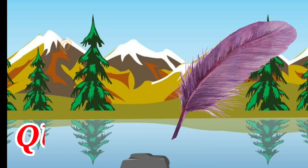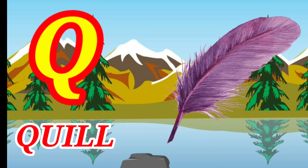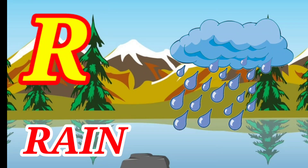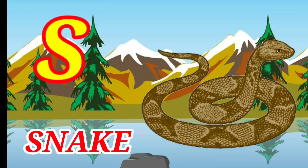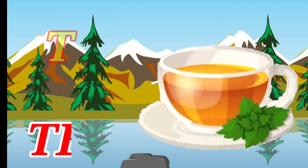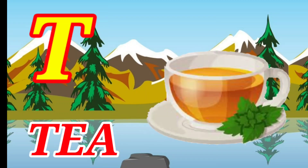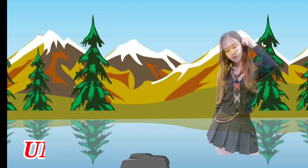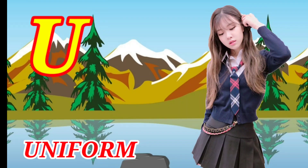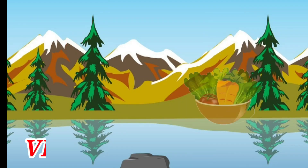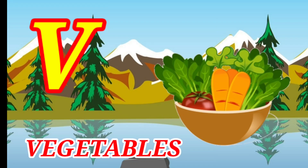U for wheel, R for ranch, S for snake, D for tea, U for uniform, V for vegetable.